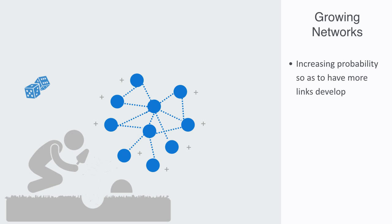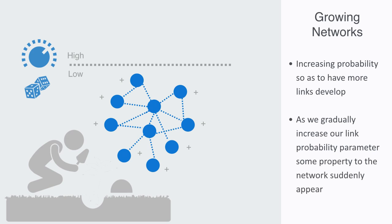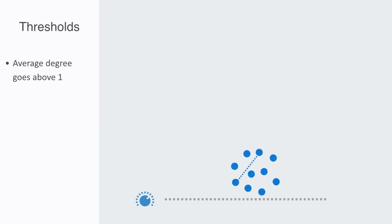One interesting thing we find when we do this is that there are thresholds and phase transitions during the network's development. By thresholds, we simply mean that by gradually increasing our link probability parameter, some property to the network suddenly appeared when we passed a critical value. For example, our first threshold is when the average degree goes above 1 over the total number of nodes in the network. At this threshold, we start to get our first connection. At degree 1, that is when every node has on average one connection, the network starts to appear connected.